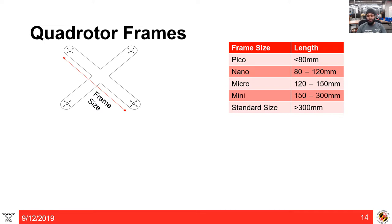Depending on the size, frames are made of different materials. Pico quadrotors are made from PCB boards, which are very light — the components are etched directly onto the board to save space and weight. These frames are not strong, but because pico quadrotors have low momentum, the collision impact is generally very weak, so PCB works fine. For nano or micro quadrotors, carbon fiber is the most common material due to its low weight and high strength. Important: carbon fiber is electrically conductive, so add insulation to your electronics before testing.